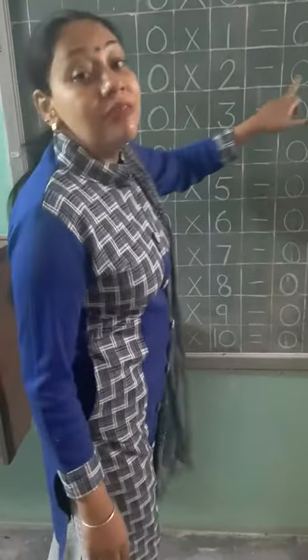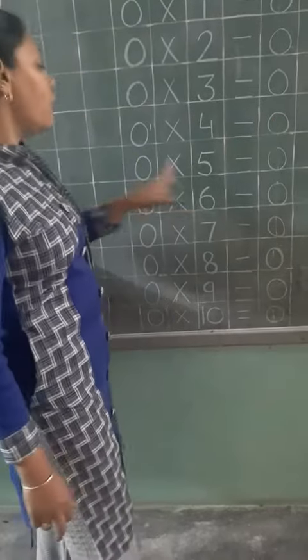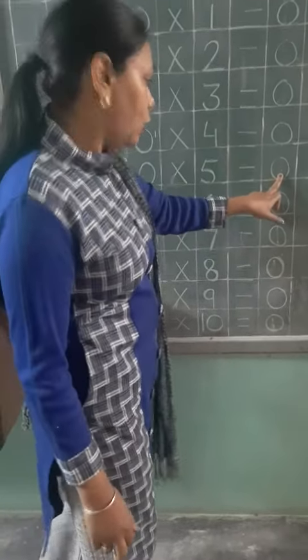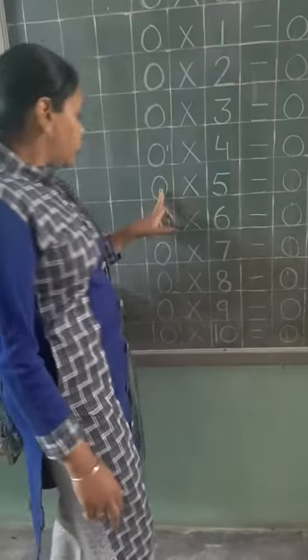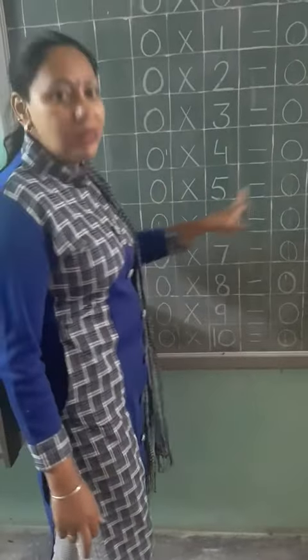Zero times three is zero. Zero times four is zero.